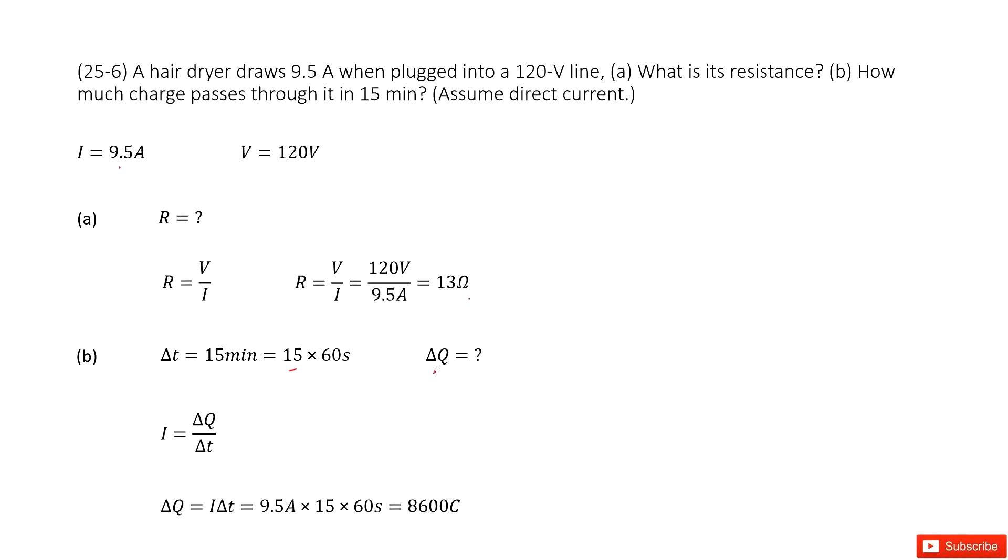We need to find the charge. We consider the definition of current as the change in charge divided by Δt: I = ΔQ/Δt. Then we can get the change in charge equals the current times the time: ΔQ = IΔt = 9.5A × 15 × 60s = 8600C. Thank you.